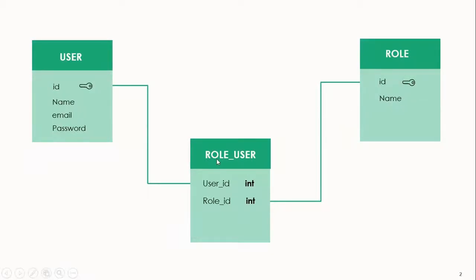Let's go back to this pivot table. The pivot table is like an agent or mediator table which manages the many-to-many relationship between two tables. The name of this pivot table is derived from the singular names of the related models arranged in alphabetical order. That's why we have 'role' which comes before 'user' in alphabetical order — so we have role_user.